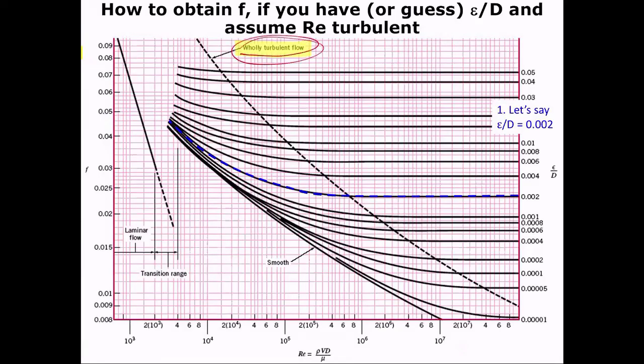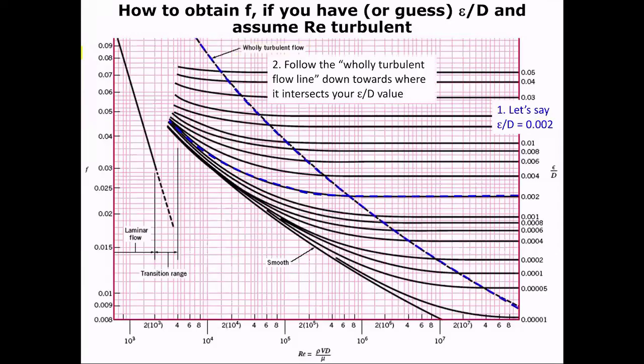So in this particular case, we're going to follow a relative roughness of 0.002. But we're going to assume that we have wholly turbulent flow. So you see this notched line in the middle of your Moody diagram.